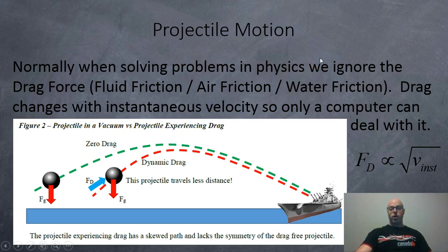Normally when solving problems in physics, we ignore the drag force, the fluid friction or air friction or water friction. Drag force changes with instantaneous velocity, so only a computer can actually deal with it. The drag force is proportional to or depends on the instantaneous velocity, the square root of it. You would have to do thousands of calculations to get a fairly accurate value, and you would need a computer to do that using some numerical calculus, which would be too difficult. So we ignore it.